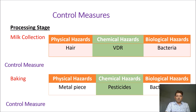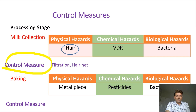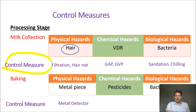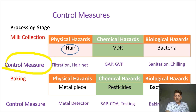What could be the control measures? For hair during milk reception, you can do filtration or use hair nets for milking personnel. For veterinary drug residue, you can apply good agricultural practice or good veterinary practice. For bacterial growth, you can use good sanitation methods or do immediate chilling after milk collection. For metal pieces in baking, you can use a metal detector. For pesticides, you can have a better supplier approval program, request certificates of analysis, or test the product itself.